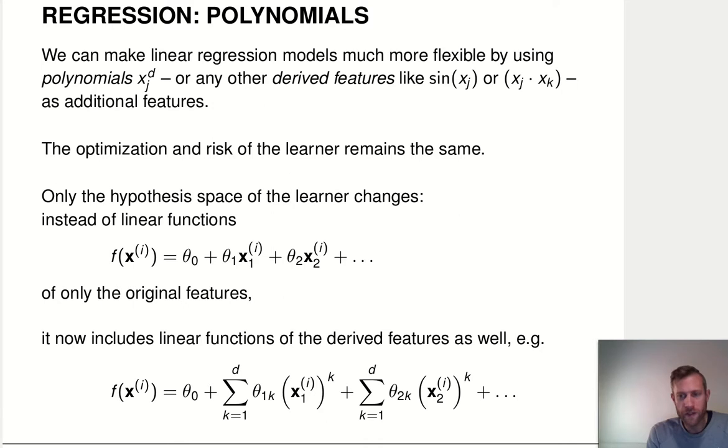The good news is that we can use everything we already know about linear regression and make it much more powerful and flexible by defining new additional features that turn linear regression into something more flexible. One way to do that would be to not just use the original features that we've observed, but also use polynomial transformations of these features.